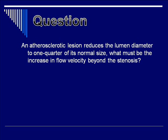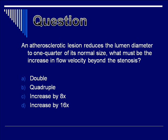Let's do a question. An atherosclerotic lesion reduces the lumen diameter to one quarter of its normal size. What must be the increase in flow velocity beyond the stenosis? Is the answer A, double? B, quadruple? C, increased by a factor of 8x? Or D, increased by a factor of 16x? You may pause this video to consider your response. The correct answer is B, quadruple, as you can tell from the continuity equation.